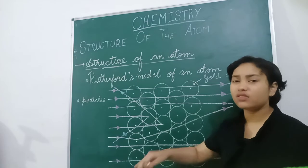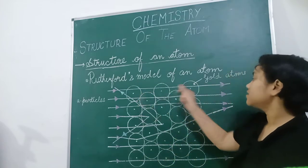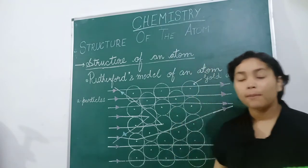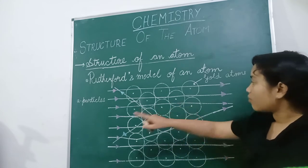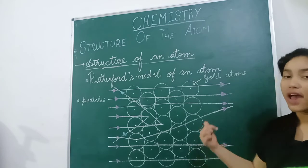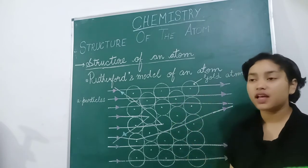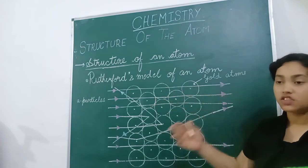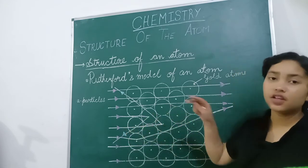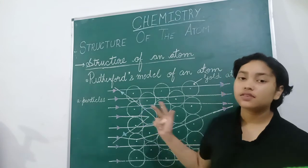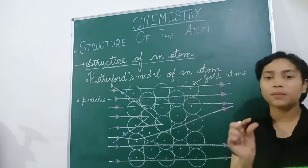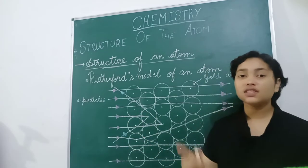Rutherford concluded that the results were unexpected because every particle was deflecting out from the middle of the atom's structure. Most of the alpha particles just passed straight through. So he observed that most of the alpha particles passed straight and parallel to each other, which means the atoms have a lot of empty space between them — a large gap. Something inside the nucleus was causing the alpha particles to deflect out. This was the conclusion: something is in the middle of the atom that is deflecting the particles.